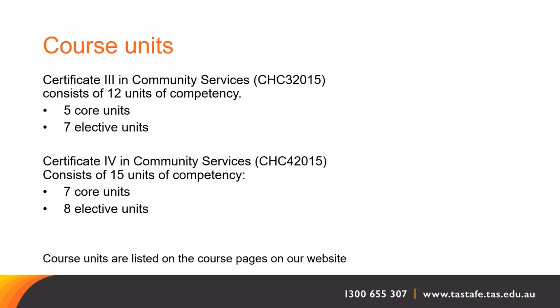The course structure: For Certificate IV in Community Services, there are 15 units of competency — 7 core units and 8 elective units. The Certificate III Community Services course consists of 12 units of competency — 5 core units and 7 elective units.